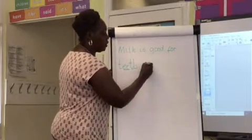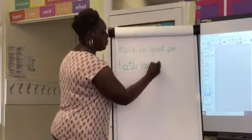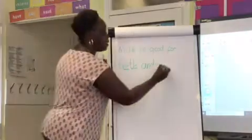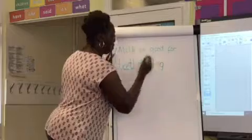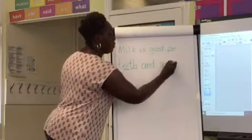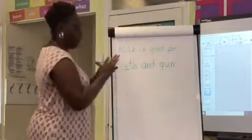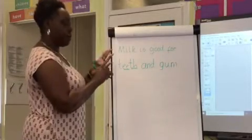So again, blend and go. Milk is good for teeth and, good for the word gums. Focus on G-U-M first. So go, ah, mmm, and then finish off with your go, ah, mmm, S.